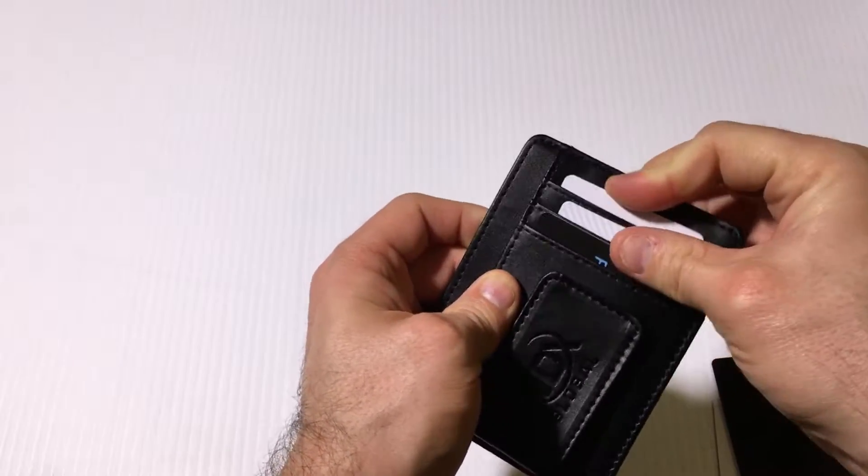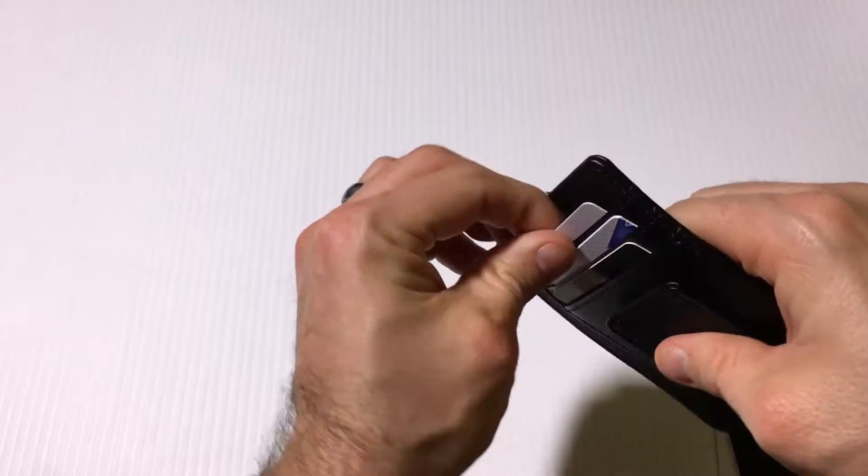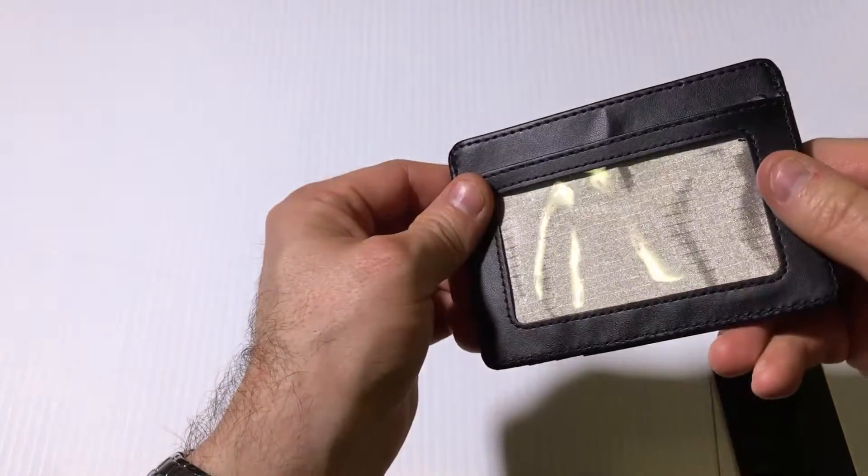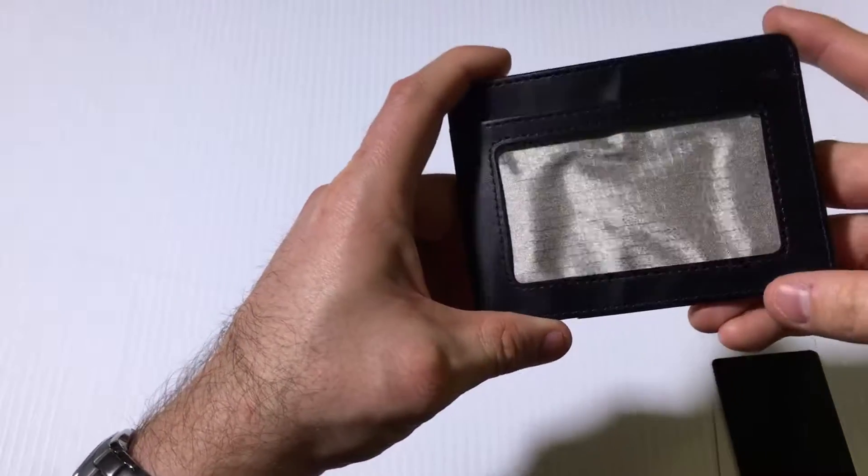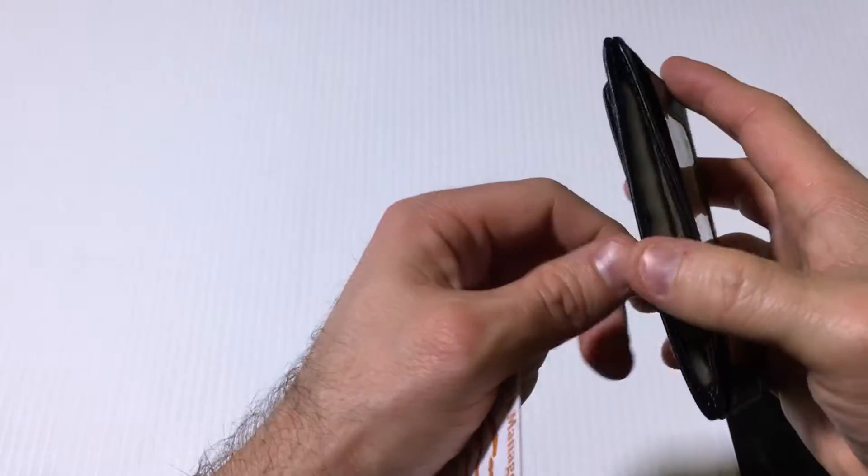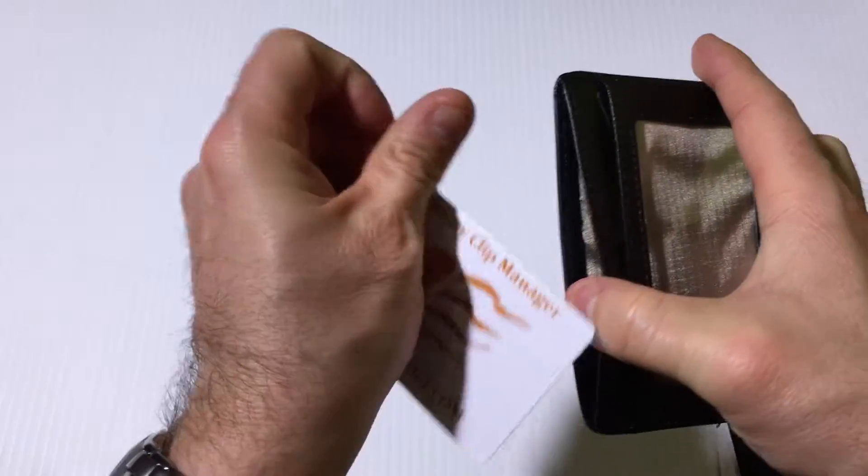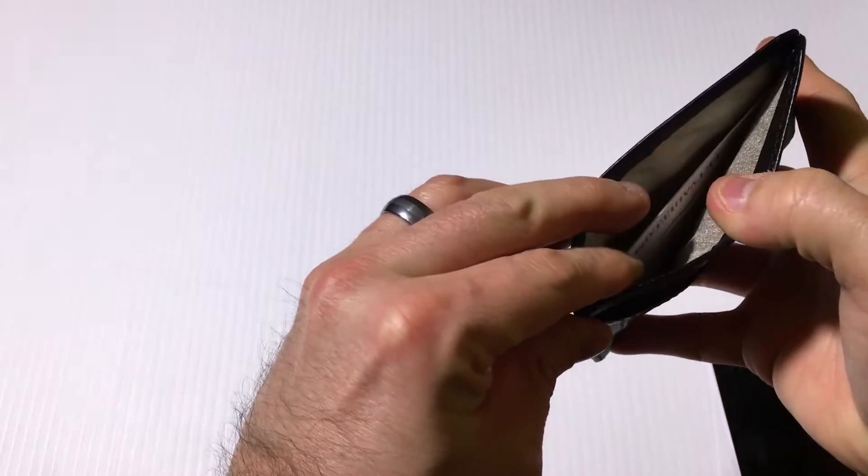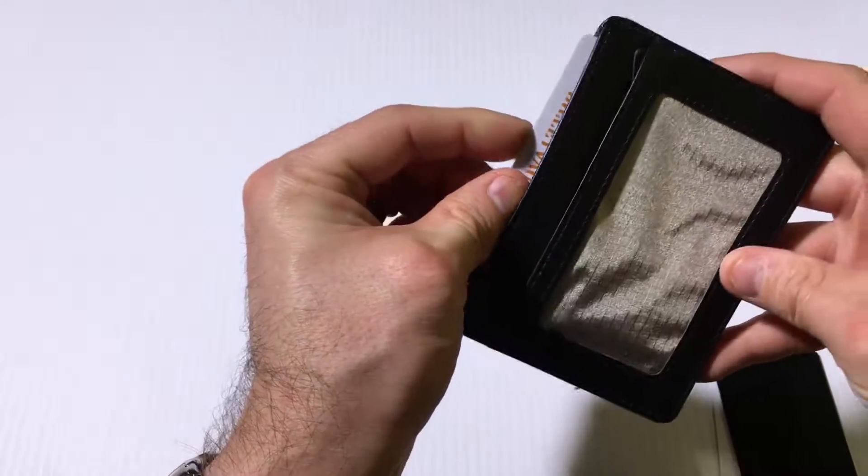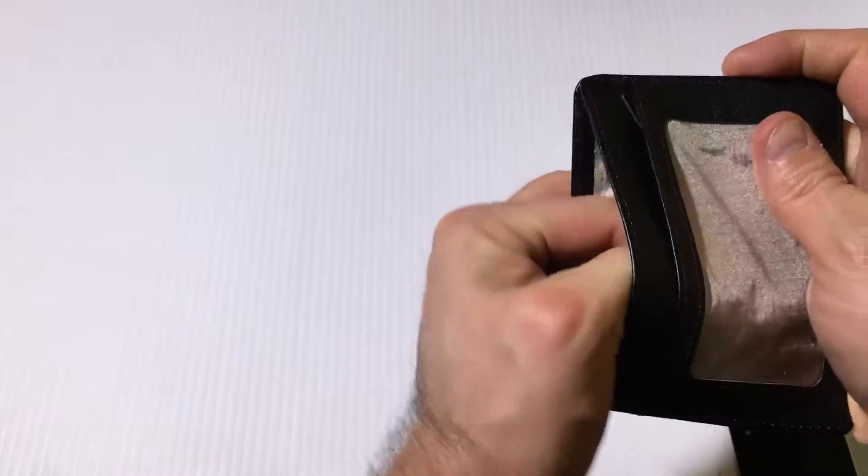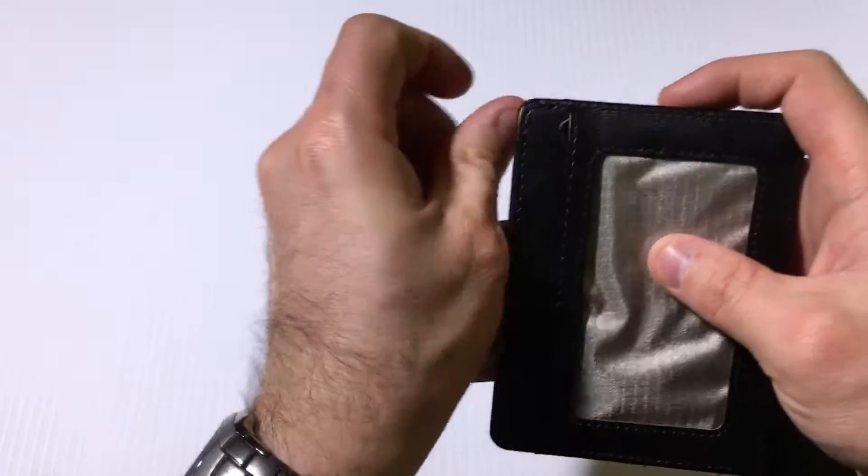It's got an even bigger pouch here, just behind the photo ID slot, and that is fairly deep. I wouldn't probably put cards or anything in here just because they go down so deep. You really have to dig it out. You can almost fit a card that way.